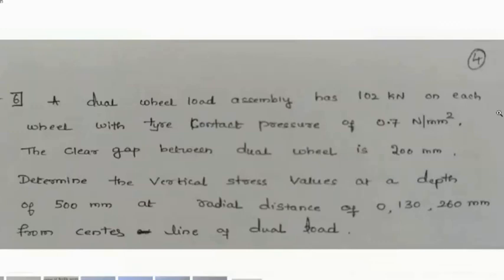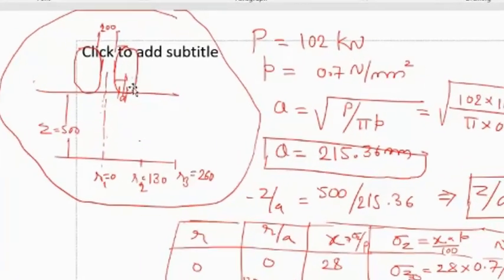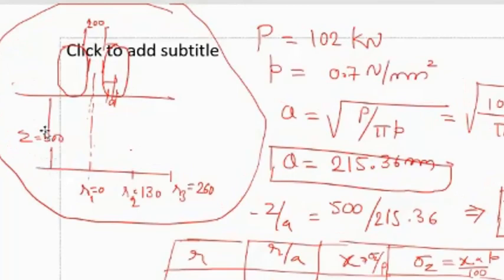Determine the vertical stress values at a depth of 500 mm at radial distance of 0, 130, and 260 mm from center line of dual wheel. Here given data: 102 is the given load, clear distance between the inner wheels is 200 mm, depth is 500 mm, and radial distances are R equal to 0, R equal to 130, and 260. At these points we need to find the stress.